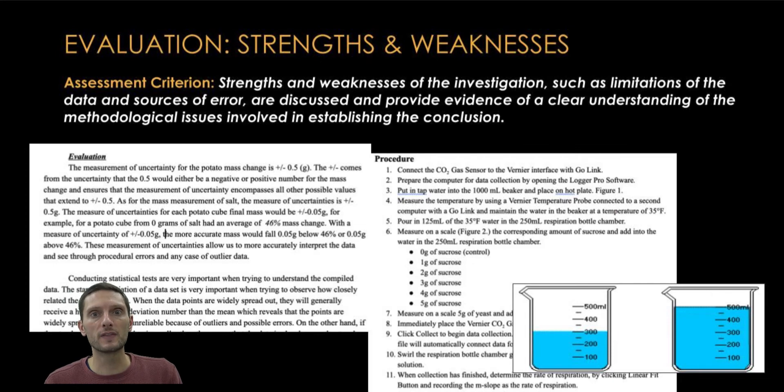The second half of the evaluation criterion is focused on the strengths and the weaknesses. The first part of that is focusing on the strengths. This is where we want to look at, specifically with the procedure or the method, what were the things that went well and what were the things that limited the ability to collect precise data and how might we fix them.